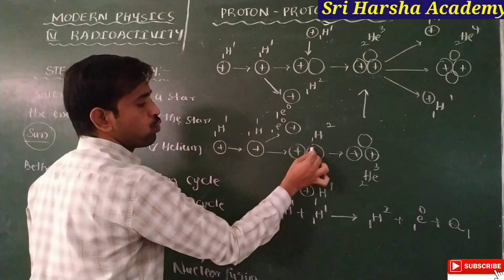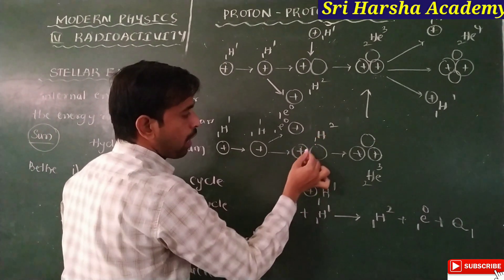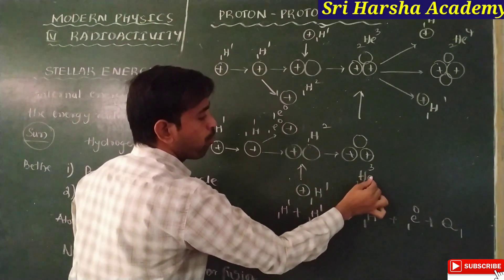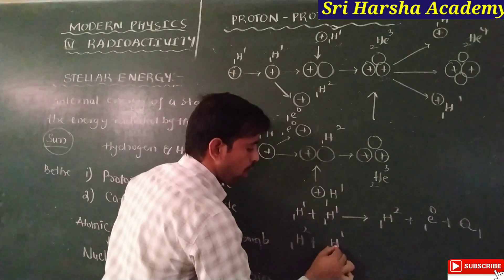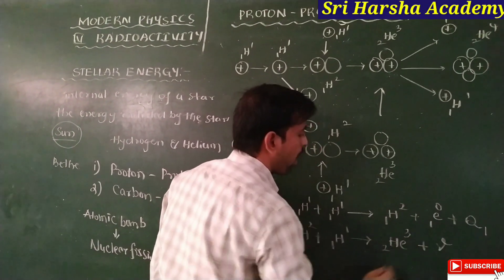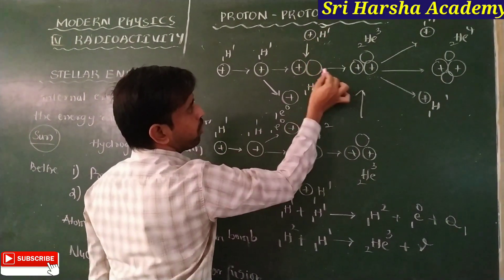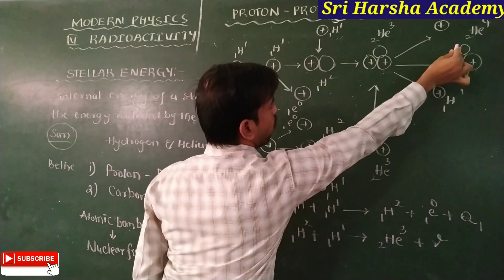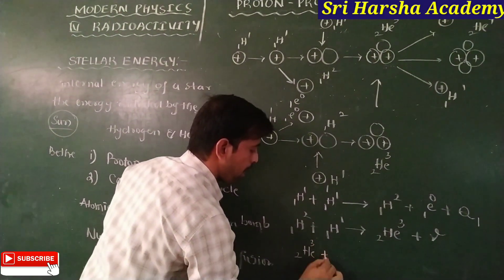Again H-1,1 plus H-1,1 gives rise to H-1,2 and a positron. This deuterium particle combines with one more proton and produces helium-2,3. So deuterium H-1,2 combined with a proton gives helium-2,3 as well as emitting gamma rays. These two helium-2,3 particles club together to produce helium-2,4 particles as well as two protons.